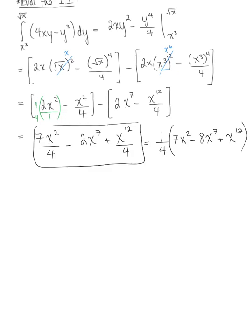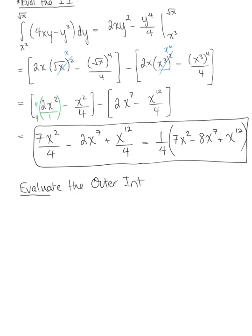So this form, again, these are both equivalent, but we'll take a peek and see which one is going to be easier to use in our final answer, or in our outer integral, which is what we want to do now. We want to evaluate the outer integral. So the outer integral had the bounds 0 to 1, and I'm going to use my factored version here, this one-fourth times 7x squared minus 8x to the seventh plus x to the twelfth dx.